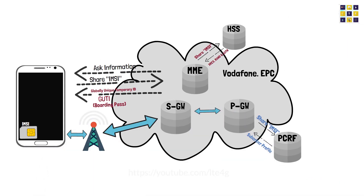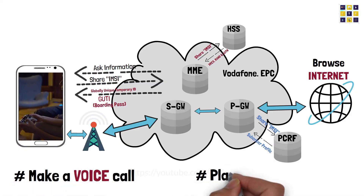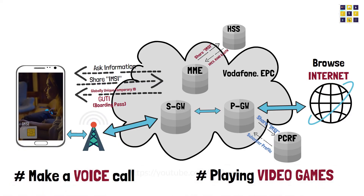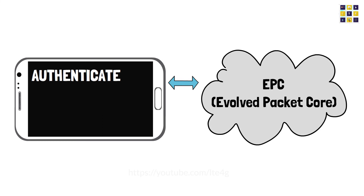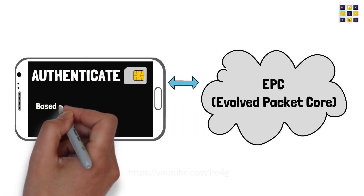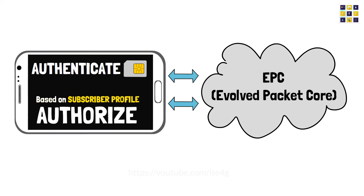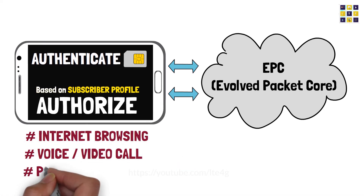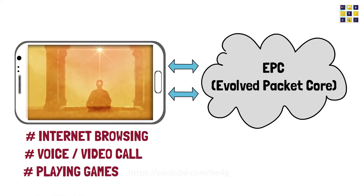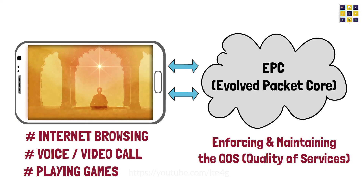After this, the user is able to browse the internet, make a voice call, or use other services such as playing video games, etc. So in a nutshell, the function of the EPC is to first authenticate the user using the SIM card information, then based on the subscriber's profile, authorizing the subscriber to use various services such as internet browsing, voice or video call, play games, etc., and to finally enforce and maintain the quality of services during the usage.